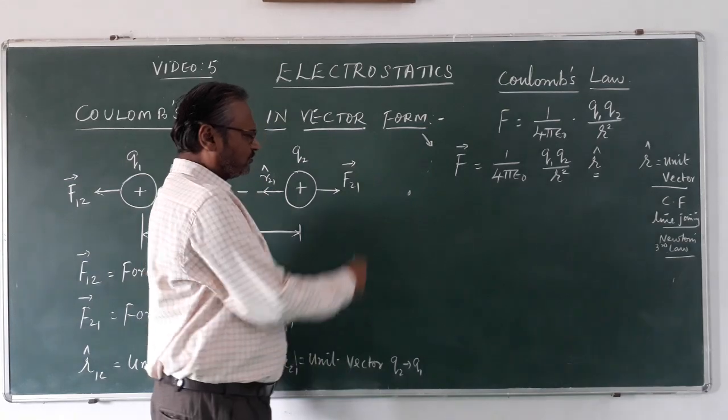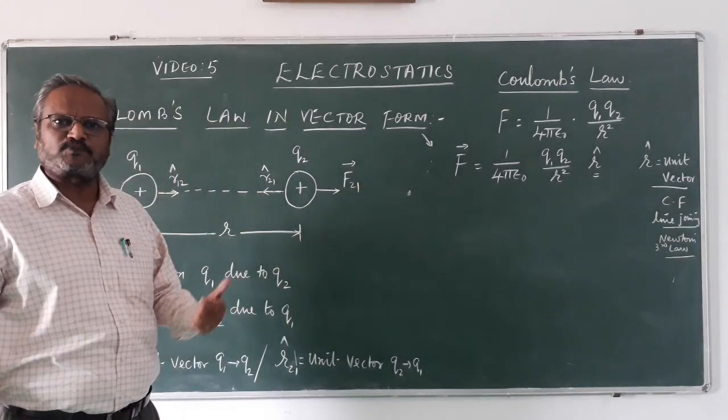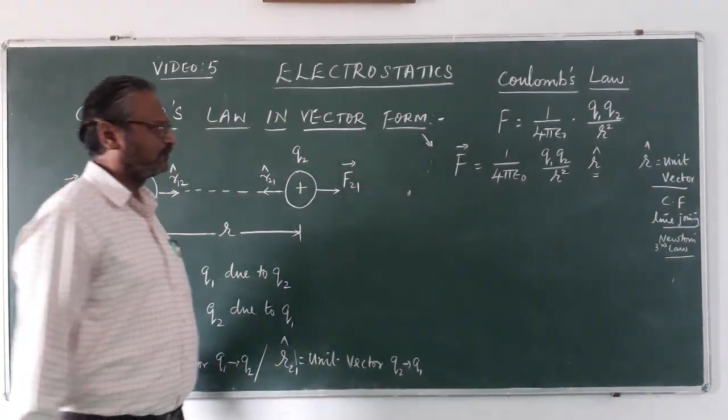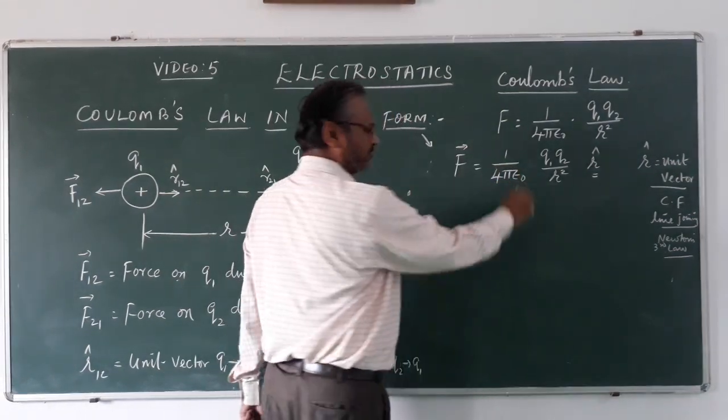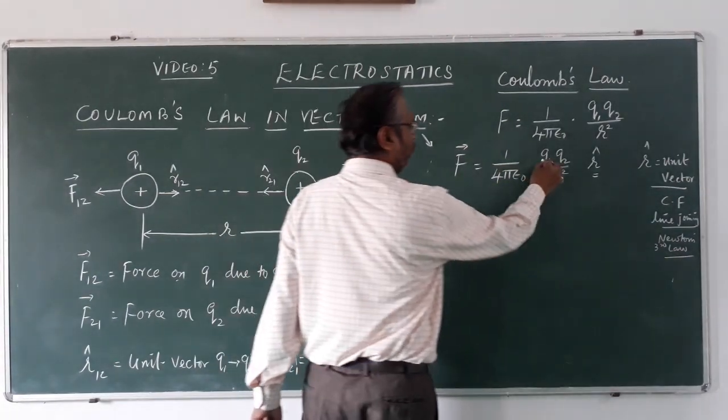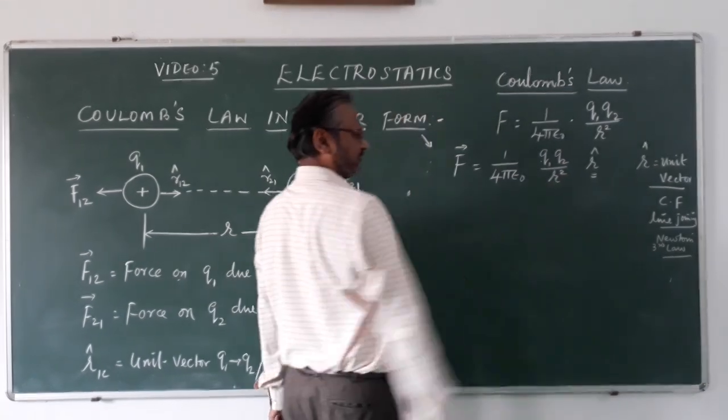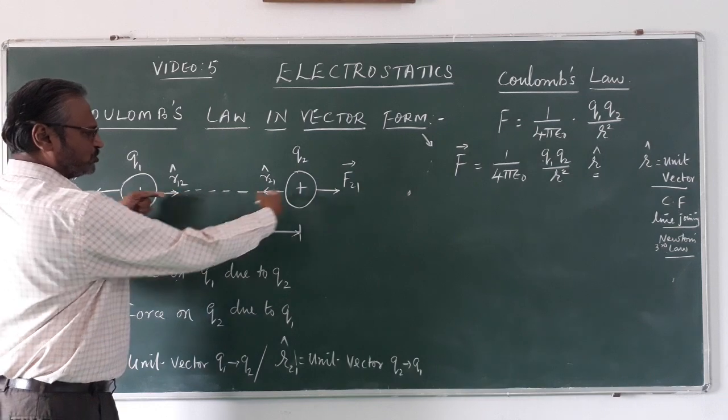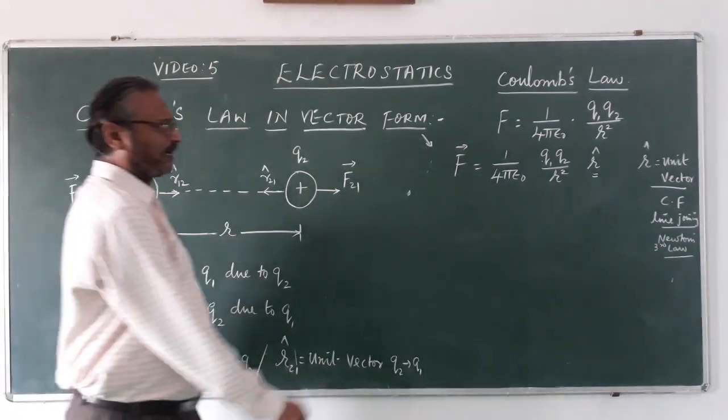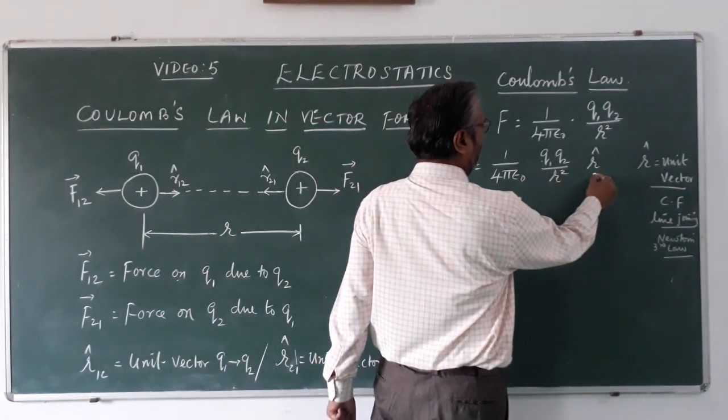In vector form, because force being a vector, we need to express it in vector form. F vector is equal to 1 upon 4πε₀ q₁q₂ upon r². But both of them, the force is same.